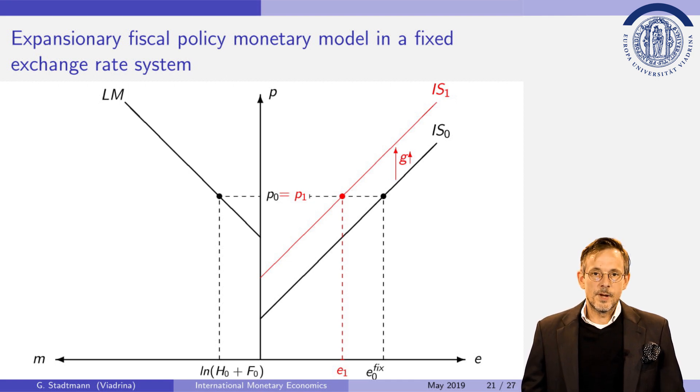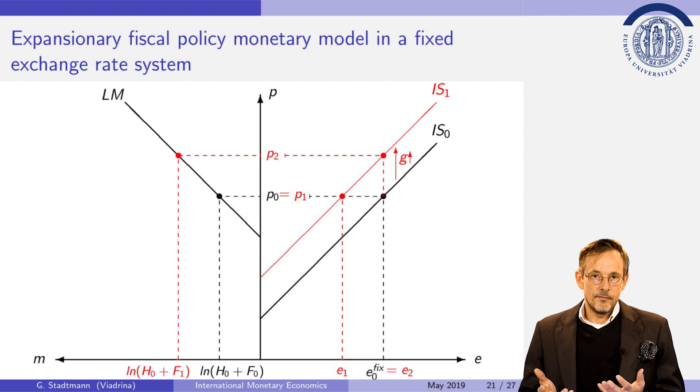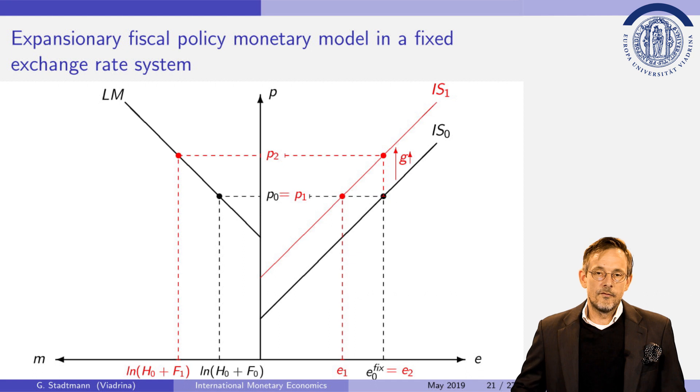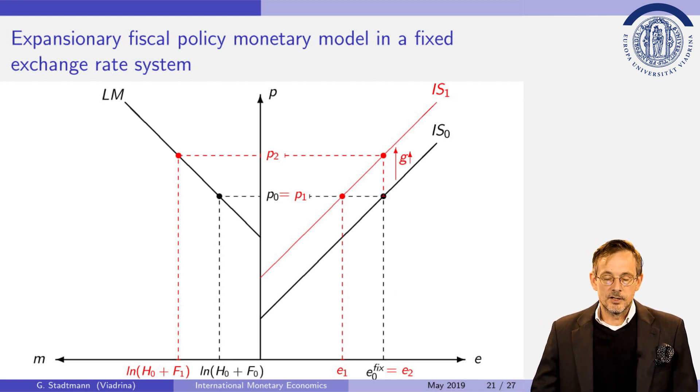In a first step the central bank has to print domestic money. When the central bank has domestic money in its hands it will walk over to the foreign exchange market. The central bank is buying foreign currency and is paying with freshly printed domestic currency. Therefore money supply in circulation will increase. This is conducted via the foreign component of money supply. The foreign component of money supply increases.